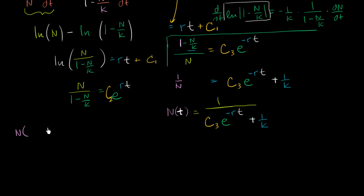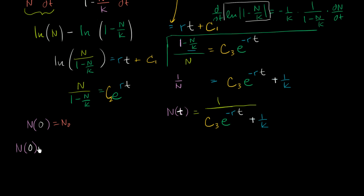Now, we're assuming that n(0) = n₀, so let's solve for the constant. n(0) equals 1 over (c3 + 1/k), and that equals n₀. Taking the reciprocal of both sides, c3 + 1/k = 1/n₀, so our constant c3 = 1/n₀ − 1/k.